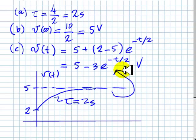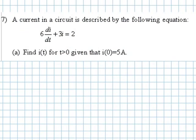Let's do another exercise. This exercise reads like this. A current in a circuit is described by the following equation: 6di/dt plus 3i equals 2. The question is to find i as the function of time for t greater than 0, and we know that the initial value of that current is 5 amps.